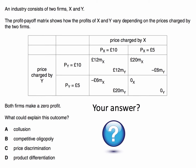An industry consists of two businesses, firms X and Y, and the payoff matrix table shows the profits of X and Y depending on the prices charged by the two firms. It's a classic game theory question built on the Prisoner's Dilemma example. We're told that both firms make a zero profit. What could explain this outcome?